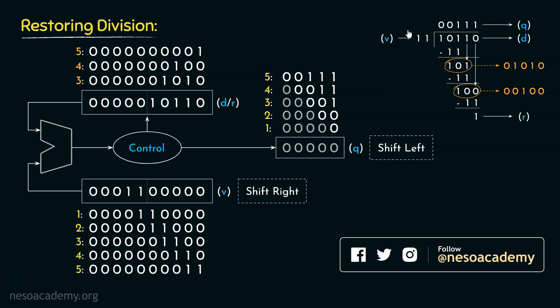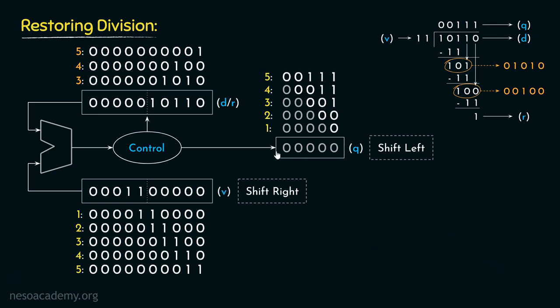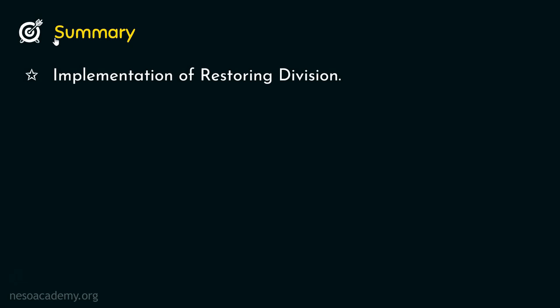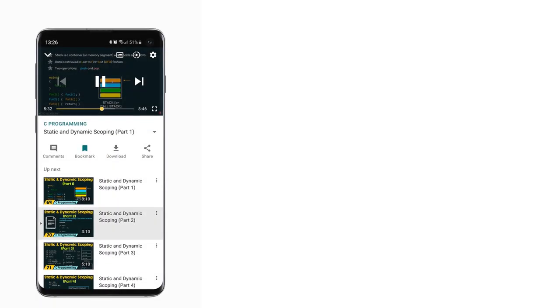As a result of this division, we obtained 00111 as the quotient in the Q register and 1 as the remainder in the DR register — exactly as expected. This is how we implement the restoring division. In the next session, we will learn how we can improve the hardware of restoring division. Thank you all for watching.